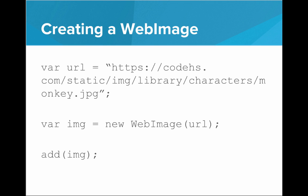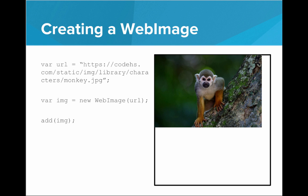So how can we create a WebImage? To create a new WebImage, all you need to do is pass it the URL where the image exists. So for example, say we had this monkey image that existed at that URL — we can make a new variable img and set it to a new WebImage constructed from that URL, and then add that image to our canvas. The result would be the monkey image on our canvas in our graphics window. That's how we can add an image to our canvas.